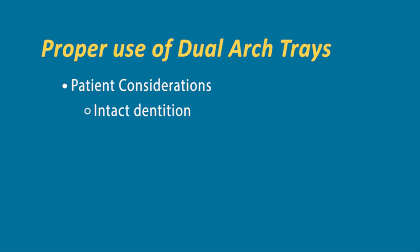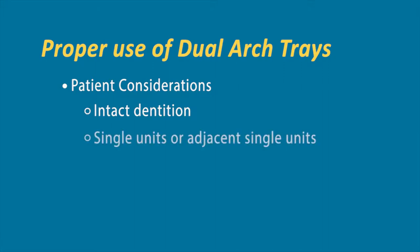You'd probably want to go to a full arch so we have more intact dentition contralaterally to articulate the casts correctly. One to two units of crown and bridge for the dual arch technique is all we recommend—single units or adjacent units, up to maybe two units. Much more than that, I would not recommend using the dual arch technique.